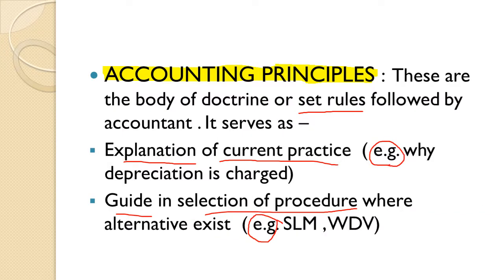Next are accounting principles. These are the body of doctrine and set rules followed by accountants. They provide an explanation of current practice — for example, why depreciation is charged. The principles tell us why depreciation is charged. We will learn a full chapter about depreciation later.